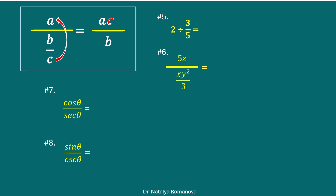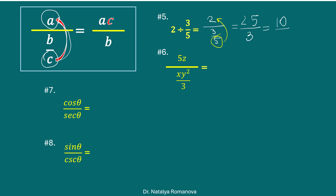The second case of our math trick: when you divide a number by a fraction, the denominator multiplies up to the numerator. For example, 2 divided by 3 fifths. The 5 goes to the numerator, so we have 2 times 5 divided by 3, which is 10 over 3.